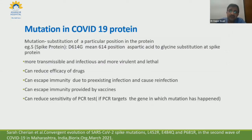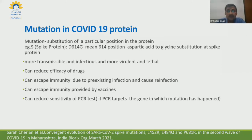A mutation is a substitution at a particular protein position. In the spike protein, D614G means the aspartic acid at position 614 is replaced by glycine. Many spike protein mutations have been noted. Because of these mutations, the virus becomes more transmissible, more infectious, more virulent, and more lethal. It can reduce drug efficacy, escape immunity from prior infection causing reinfection, escape vaccine-provided immunity, and reduce sensitivity of PCR testing if the PCR targets the mutated gene.